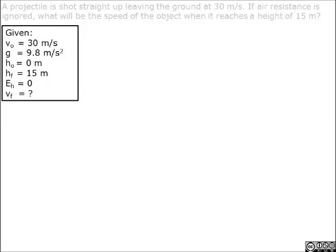Here in a given box, we indicate that the initial velocity is 30 meters per second. Gravity, as we know, is 9.8 meters per second squared.